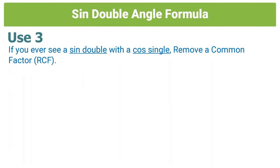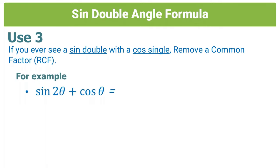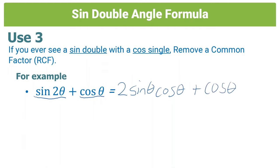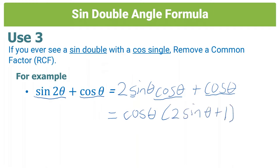The third use of the sine double angle formula: if you see a sine double with a cos single, apply the formula and remove a common factor through factorization. Given sin 2θ + cos θ, expand to 2 sin θ cos θ + cos θ. Both terms contain cos θ, so factorize: cos θ(2 sin θ + 1). That's our factorized form.